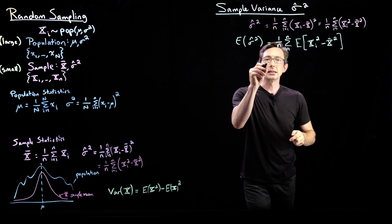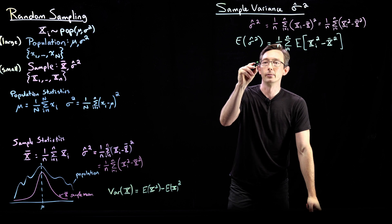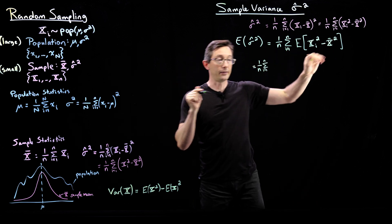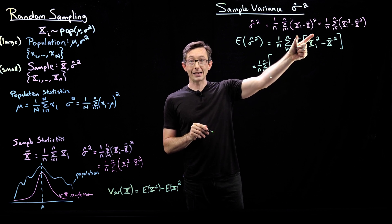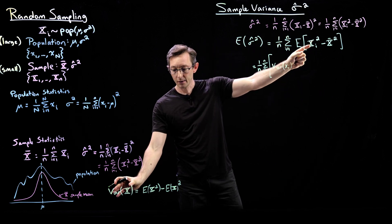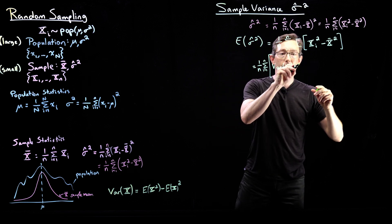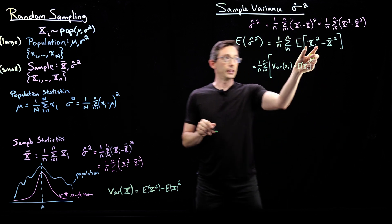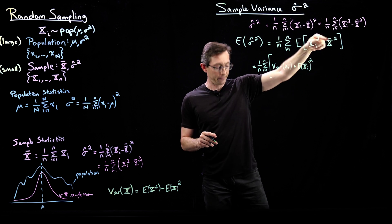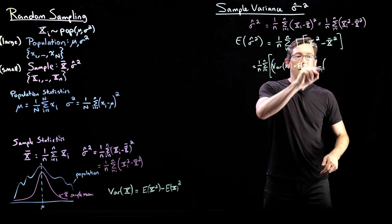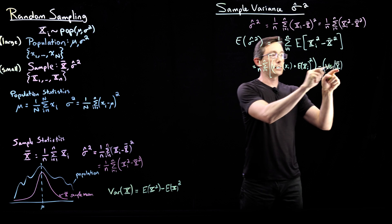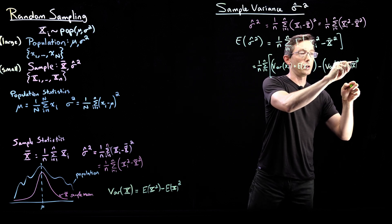So this equals 1 over n, sum i equals 1 to n of: the expected value of x_i squared — which is Var(x_i) plus (E[x_i]) squared — minus the expected value of x-bar squared, which is Var(x-bar) plus (E[x-bar]) squared.